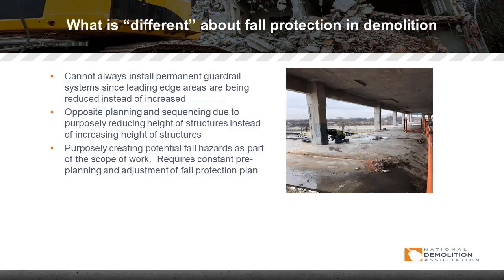What is different about fall protection in demolition? You cannot always install a permanent guardrail system since leading edge areas are being reduced instead of increased — you can demolish the structure from the outer edge working your way back, so the leading edge is actually disappearing, not increasing. As such, opposite planning and sequencing is required as you reduce the height of the structure. Purposely creating potential fall hazards as part of the scope of work requires constant pre-planning and adjustment of fall protection plans.